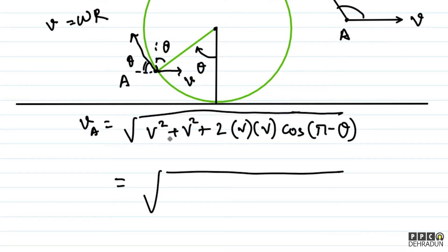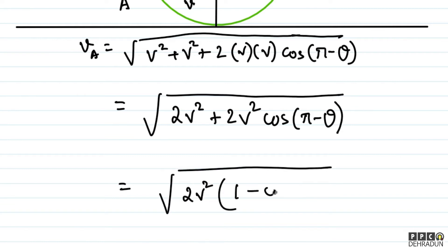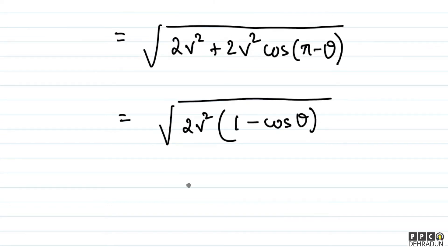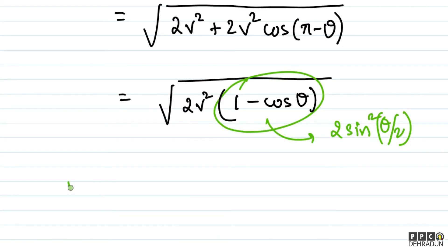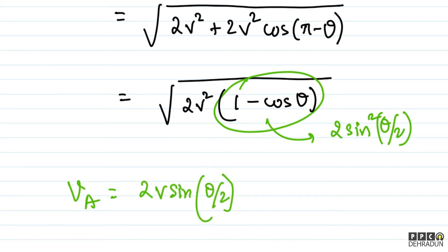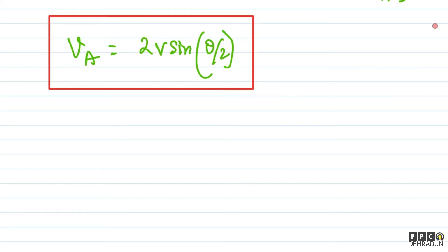This simplifies to √(2V² + 2V²·cos(π − θ)). Since cos(π − θ) = −cosθ, we get √(2V²·(1 − cosθ)). Using the identity 1 − cosθ = 2sin²(θ/2), the speed of point A at this moment becomes VA = 2V·sin(θ/2).